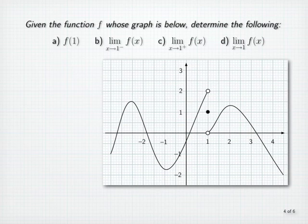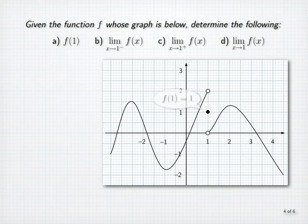Now let's look at a few example exercises. Given the function graphed here, we want to determine: a, the value f of 1; b, the limit of f of x as x approaches 1 from the left; c, the limit of f of x as x approaches 1 from the right; and d, the two-sided limit of f of x as x approaches 1. Because the point 1, 1 is on the graph, we conclude that f of 1 is equal to 1.